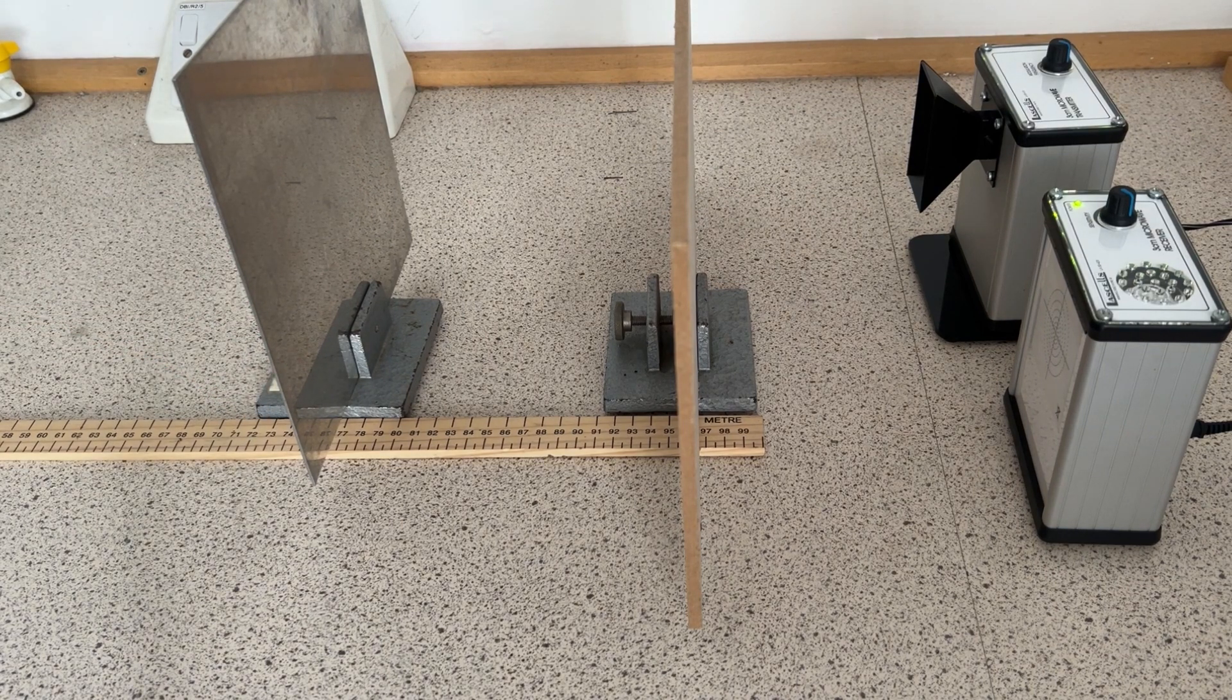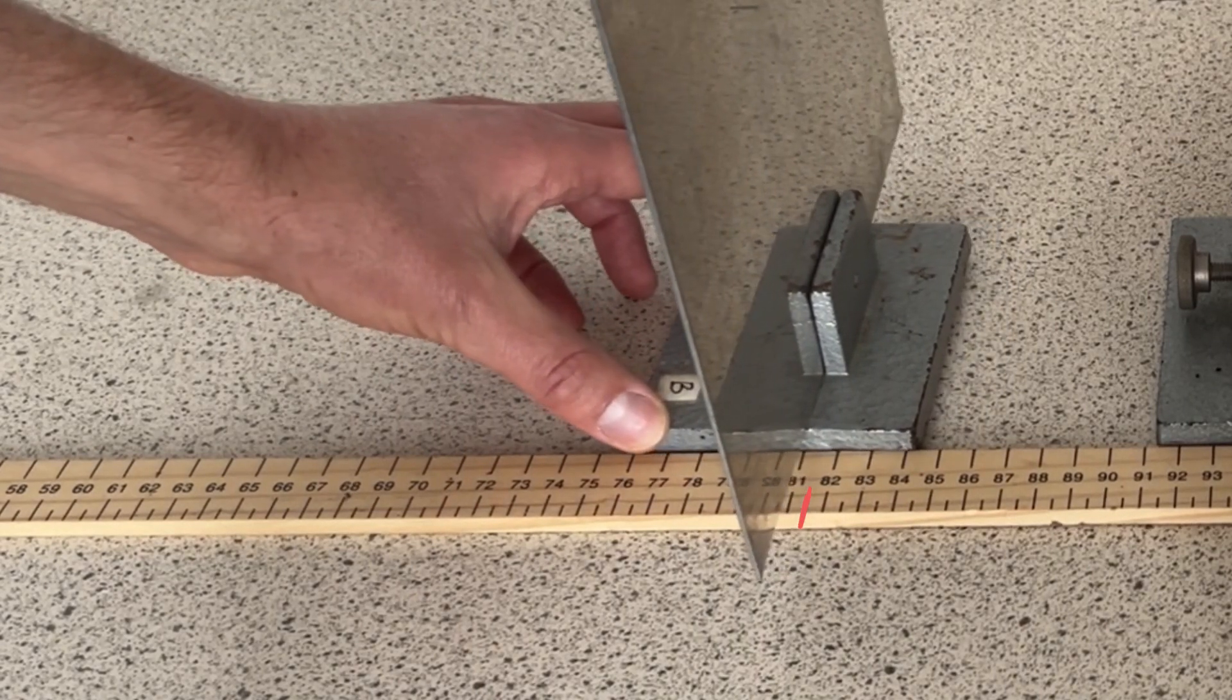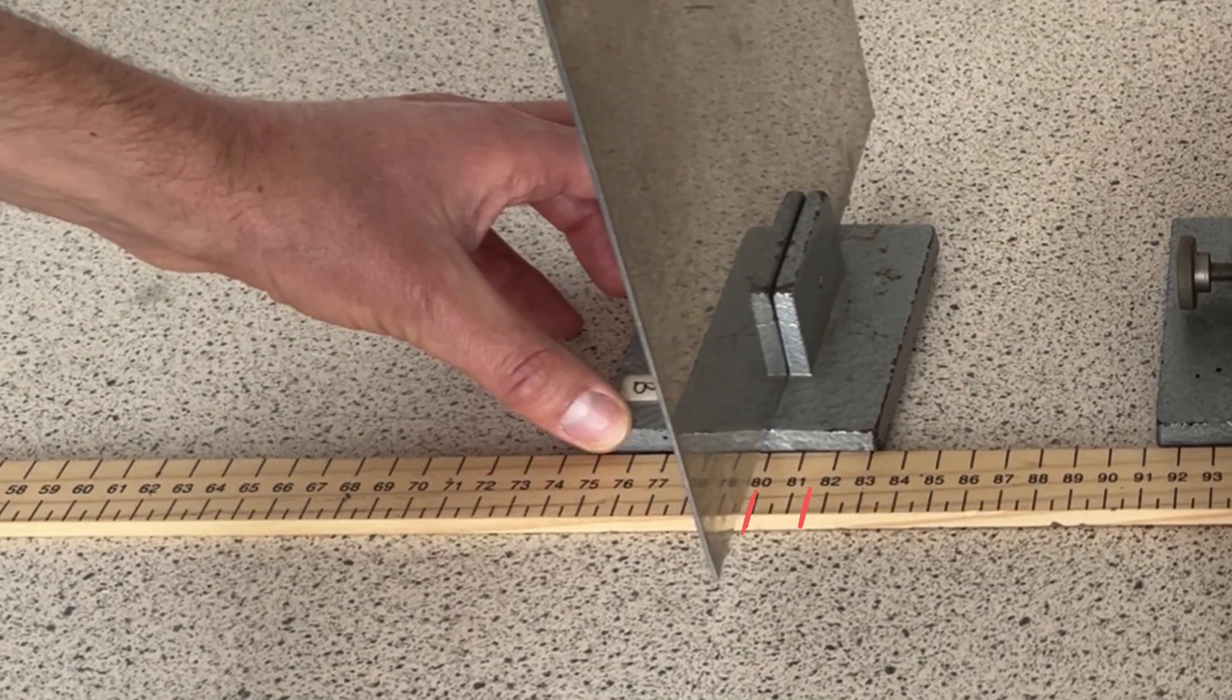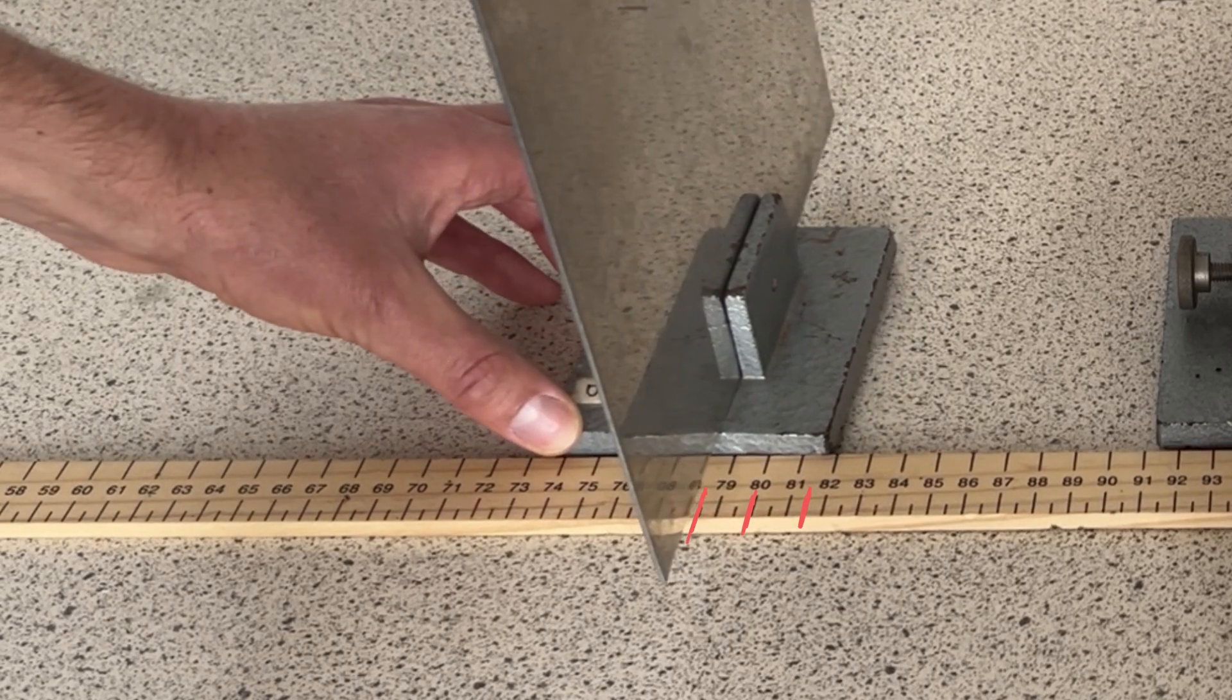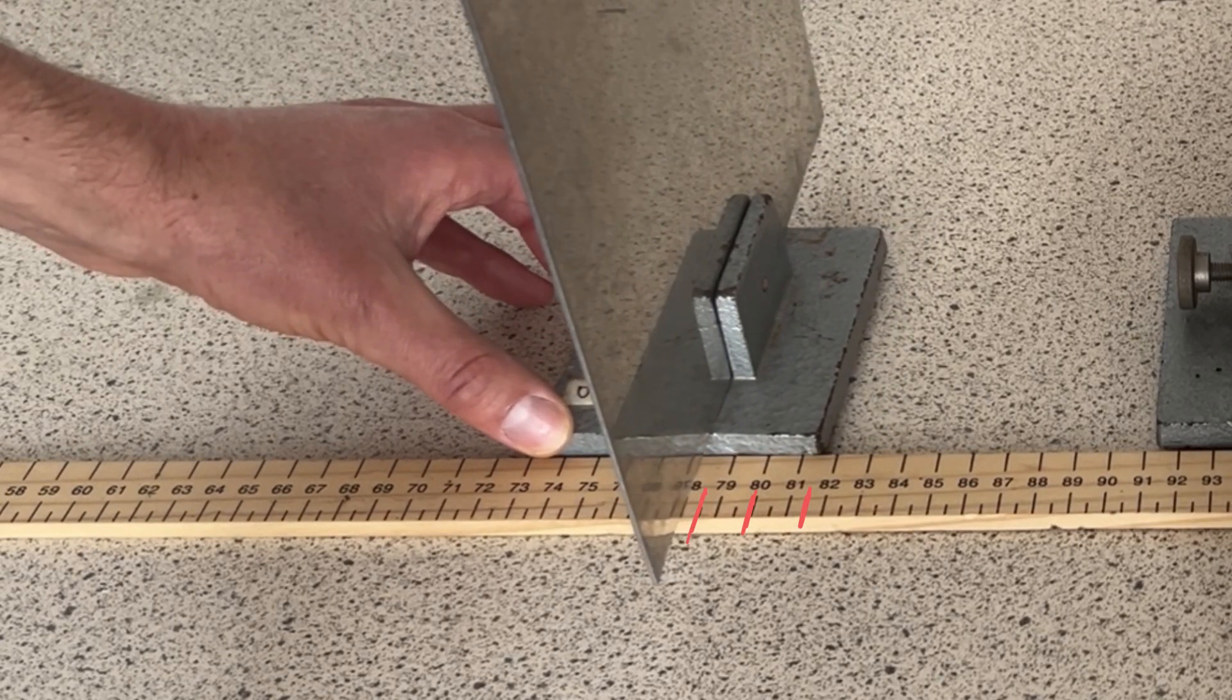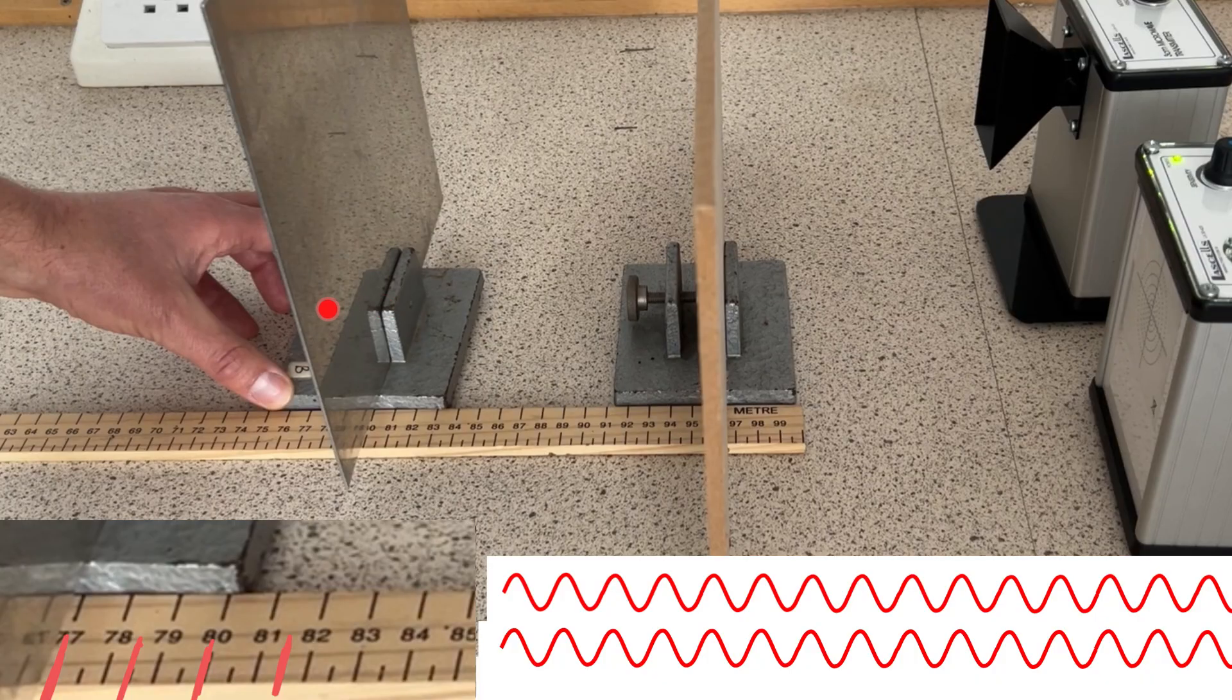So let's zoom in on that bit of video and try and take some measurements. I'm going to mark in red the positions where we hear a loud sound showing that the two reflections of microwaves are arriving in phase and interfering constructively. When we moved the metal sheet further away, the microwave which was reflecting from the metal sheet will have to travel further.